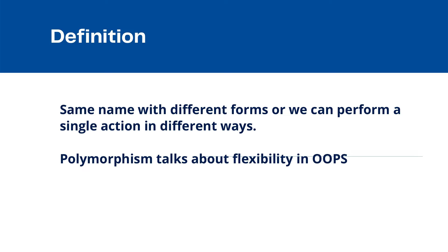Now the question is how can we achieve polymorphism? In any interview you need to first define what is polymorphism, how you can achieve it, and what are the advantages — flexibility is one advantage you can add while answering. Three things: definition, why we need it, and how we can achieve it. That's all.